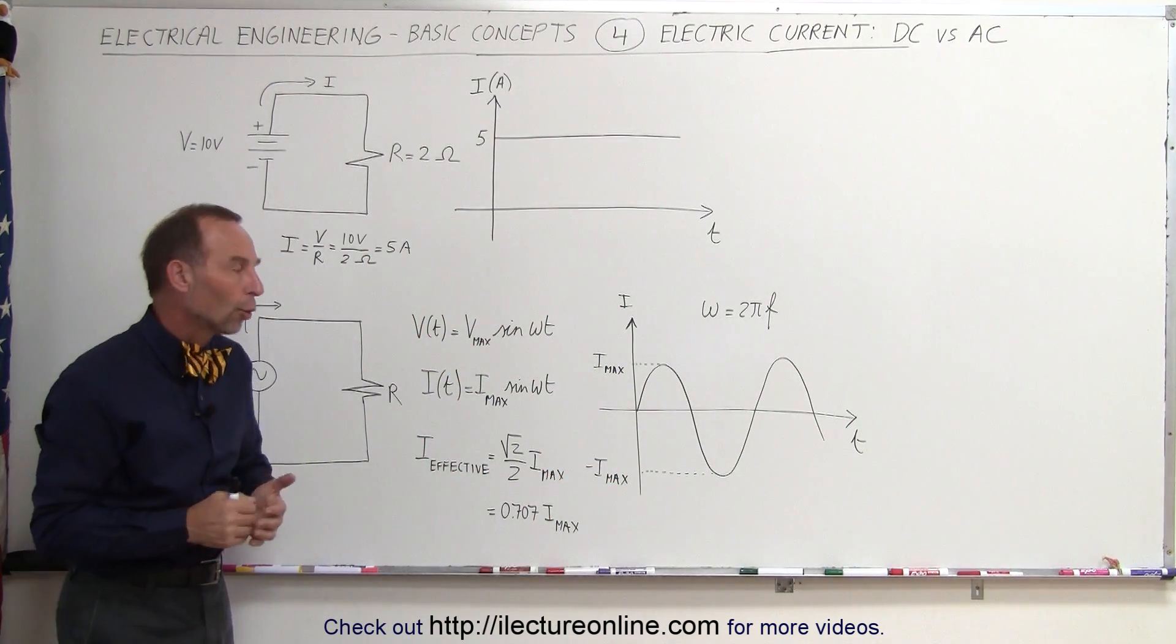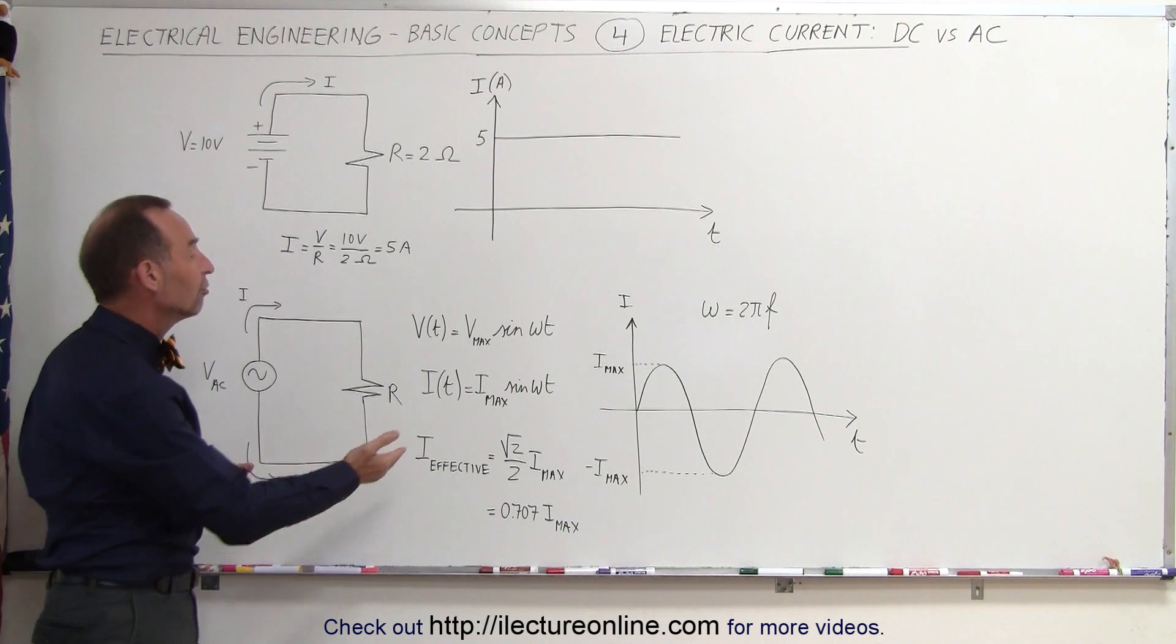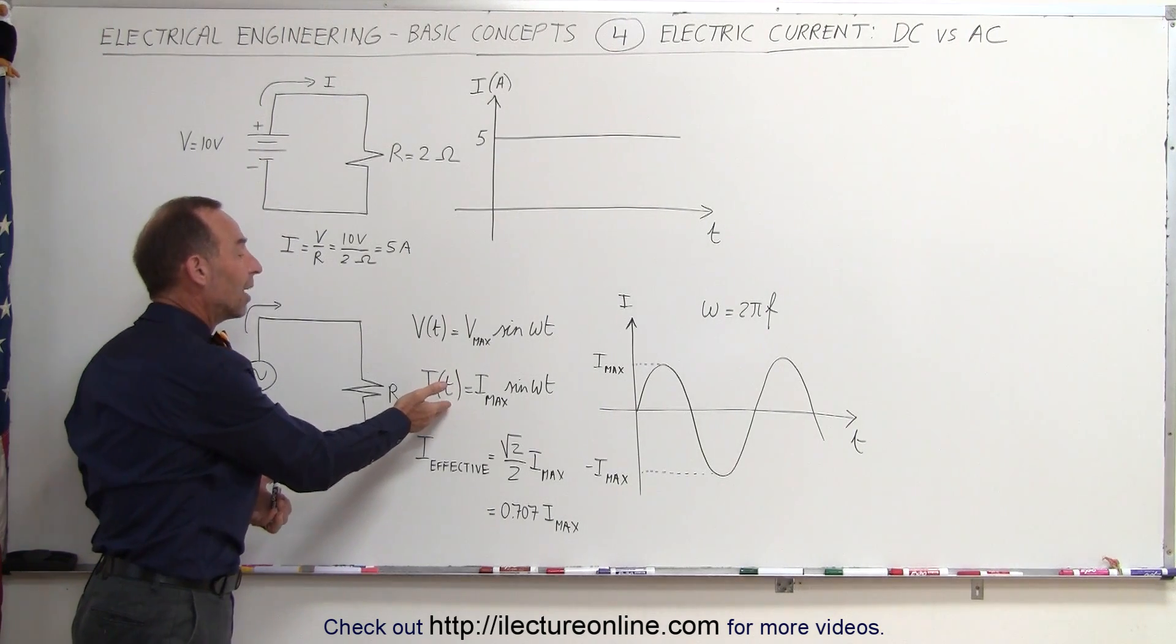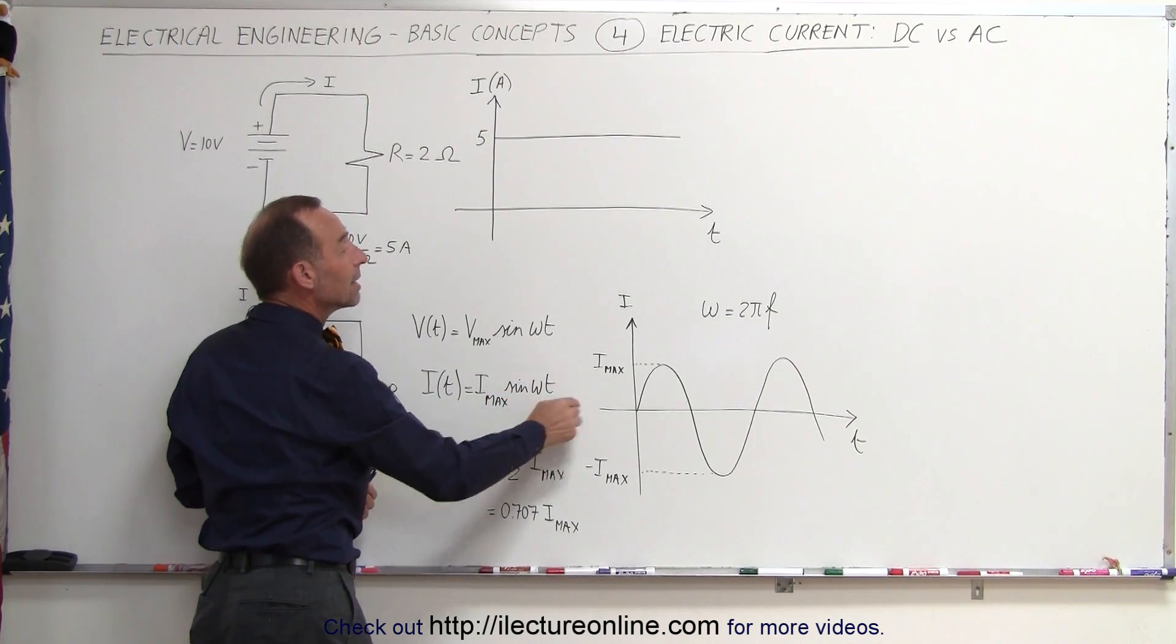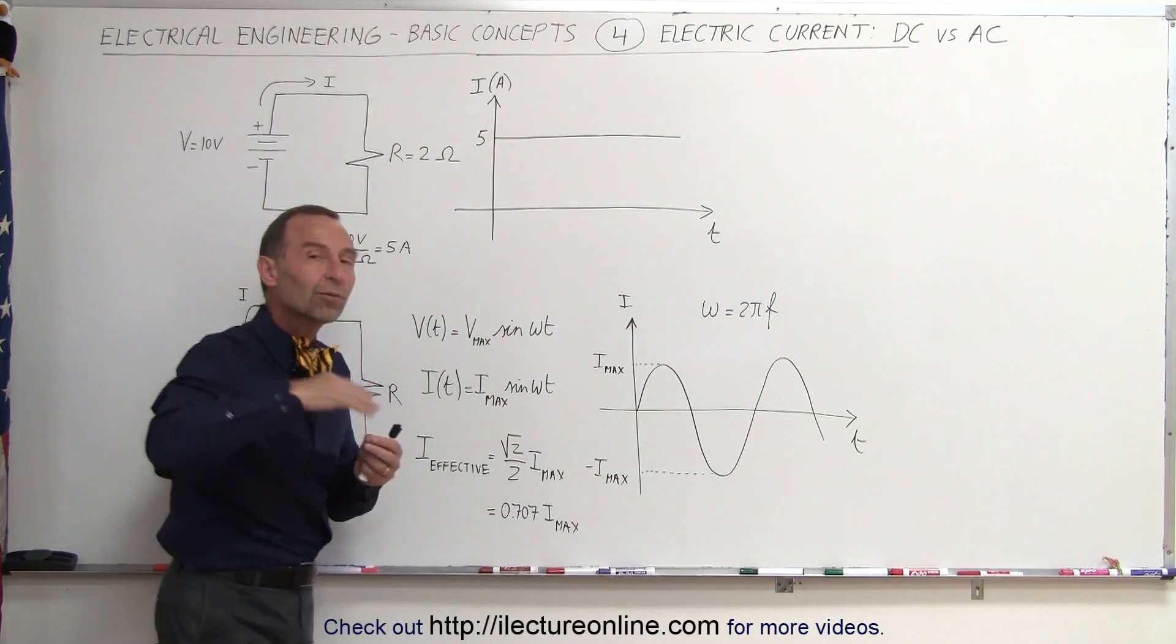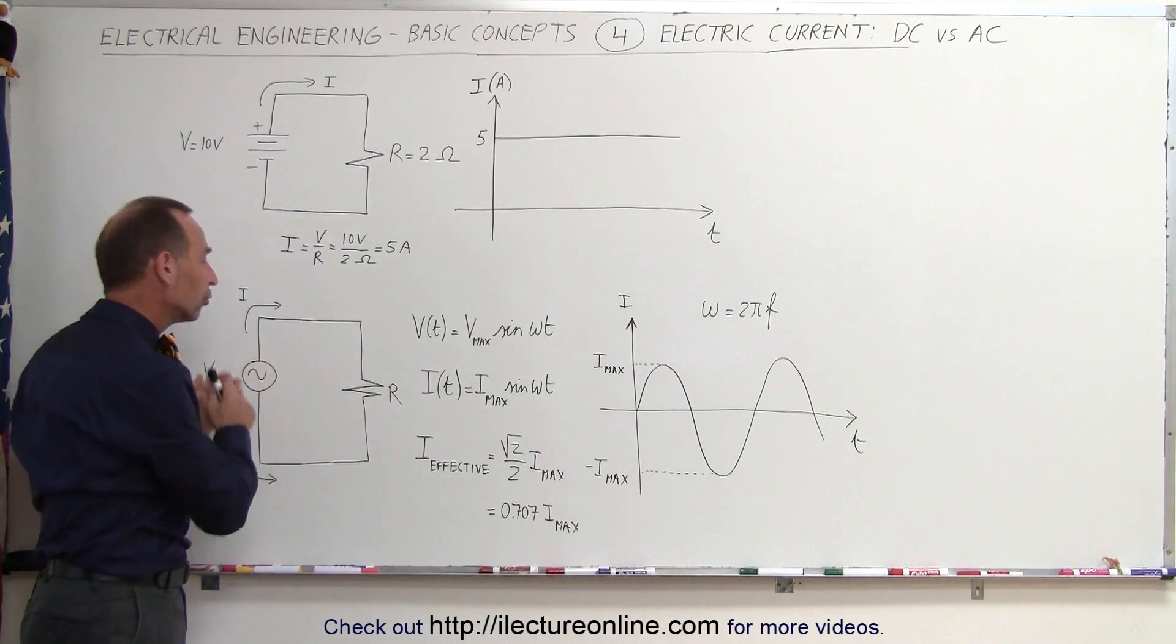We call that alternating current or AC current. The equation will be the current as a function of time equals the maximum current you can reach times the sine of omega t. Again, omega is 2 pi times the frequency of the oscillation of the voltage source.